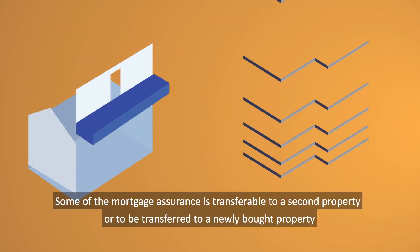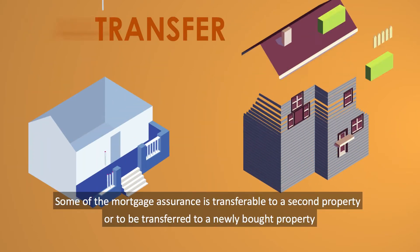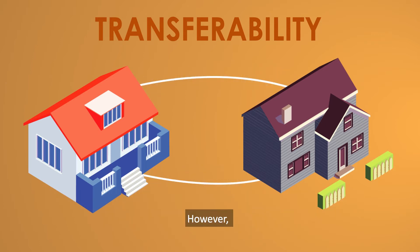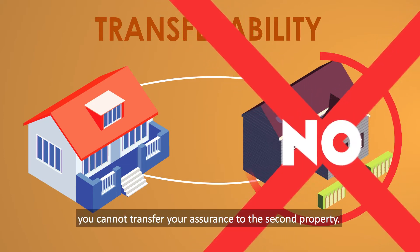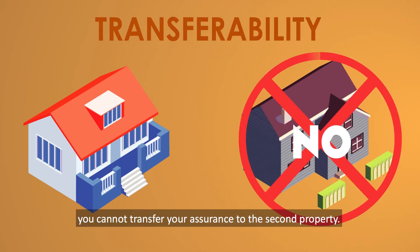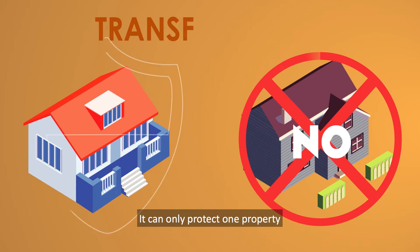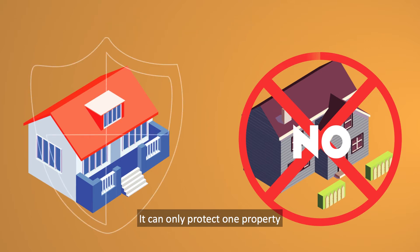Some mortgage assurances are transferable to a second property or to a newly bought property. However, in MRTA's case, you cannot transfer your assurance to a second property. It can only protect one property.